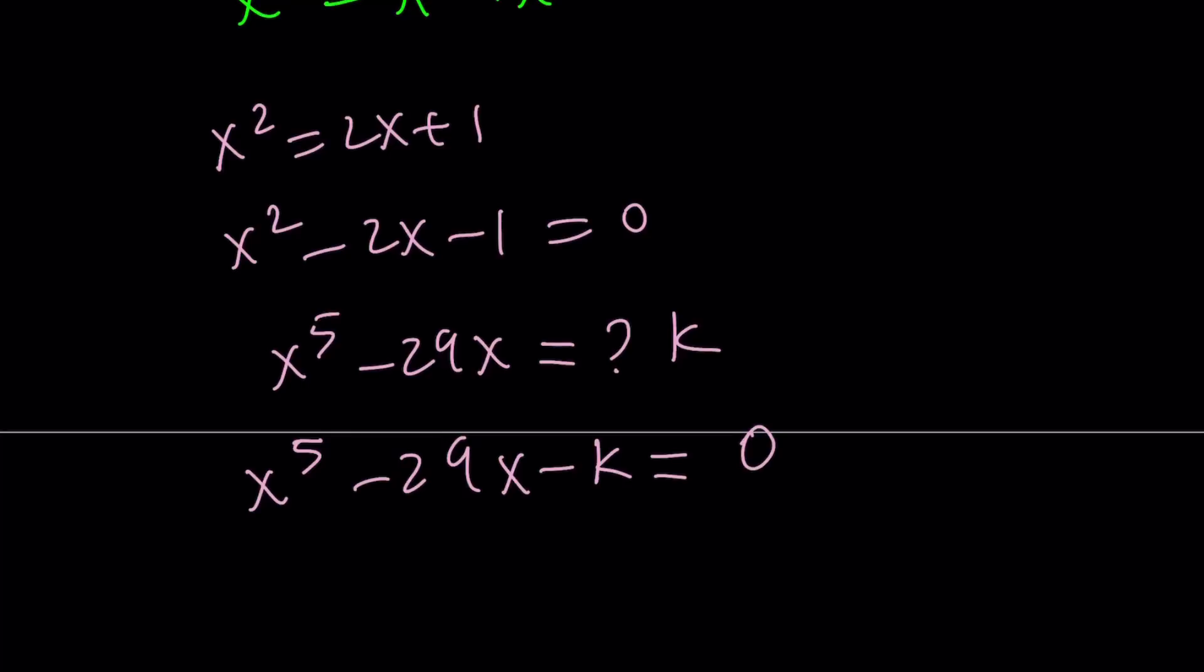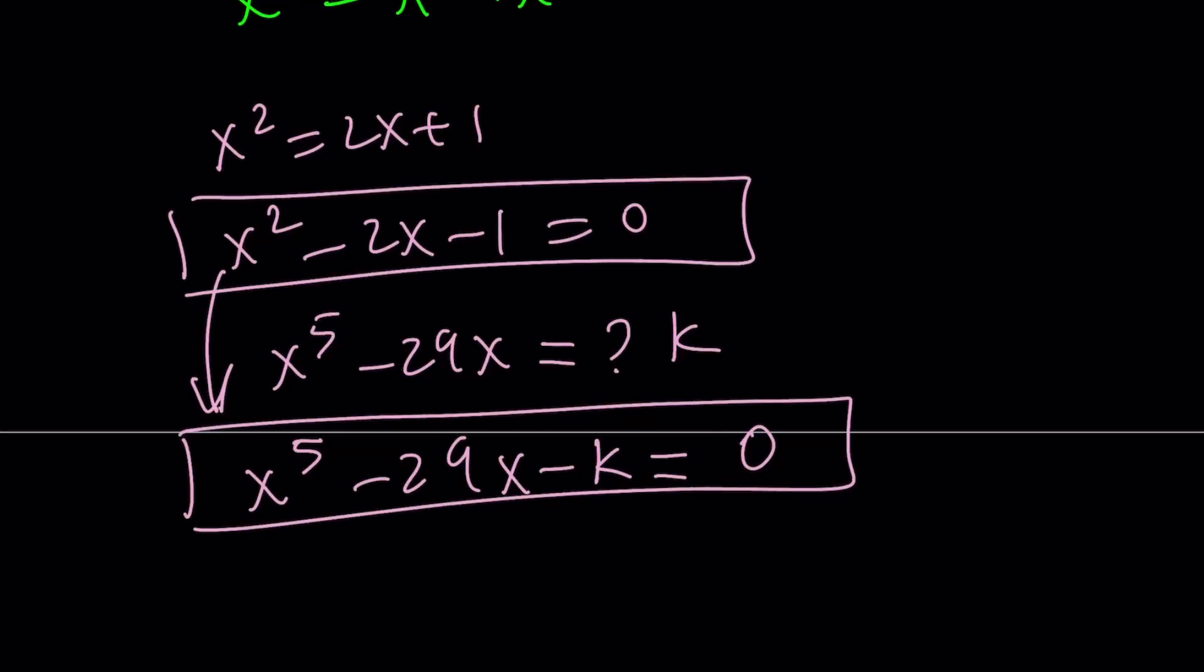Set it equal to 0. So the roots of this equation are also roots of this equation. You can go ahead and check the criteria for this quintic to be divisible by the quadratic. And you'll get the value of k as 12.